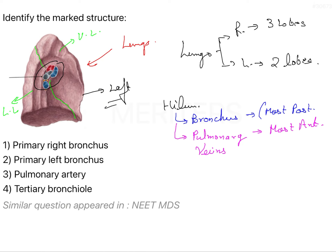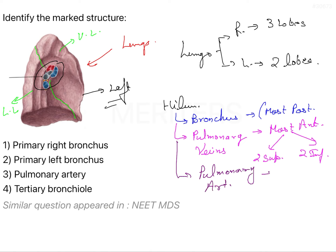There are four pulmonary veins - two superior and two inferior. Then we have the third structure, which is known as the pulmonary artery. The pulmonary artery is the structure present between the pulmonary vein and bronchus.